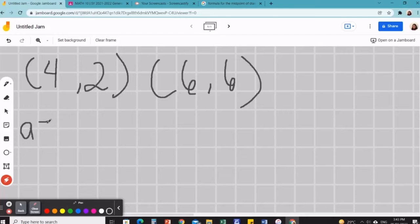So, let's proceed. So, a is equal to x sub 1, x sub 1, x sub 2, y sub 2.